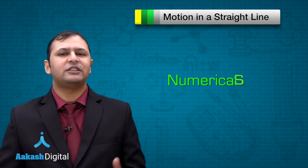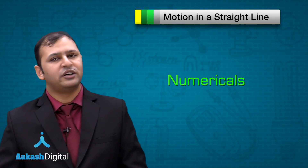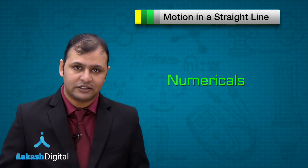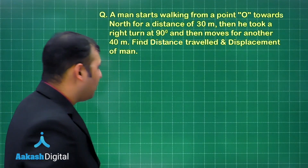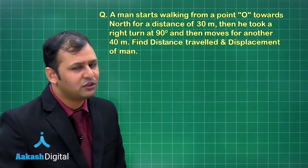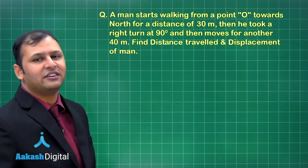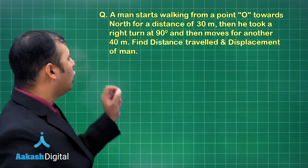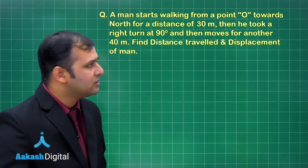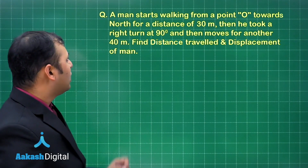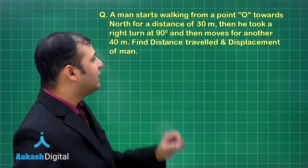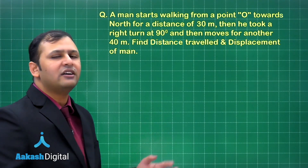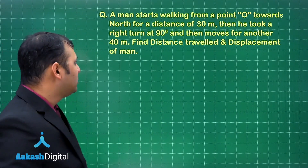Now let's take some basic numericals to understand the concept of position, distance, and displacement. A man starts walking from point O towards north for a distance of 30 meters, then takes a right turn at 90 degrees and moves for another 40 meters. We have to find the distance traveled and displacement of the man.